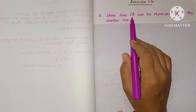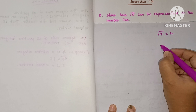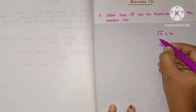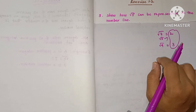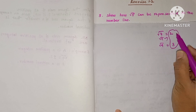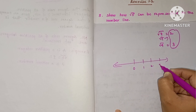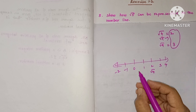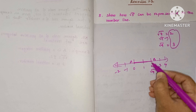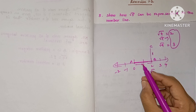Exercise 1.2, third problem: show how √5 can be represented on the number line. We know √4 = 2 and √9 = 3, so √5 lies between 2 and 3. On the number line, take points A and B such that AB = 2 units. Then draw a perpendicular line BC = 1 unit at point B.